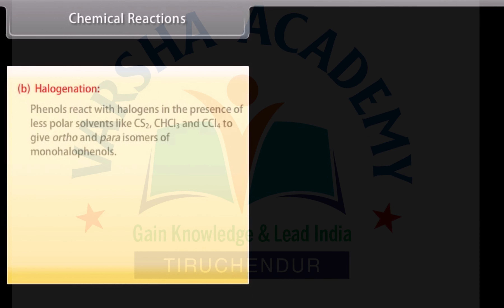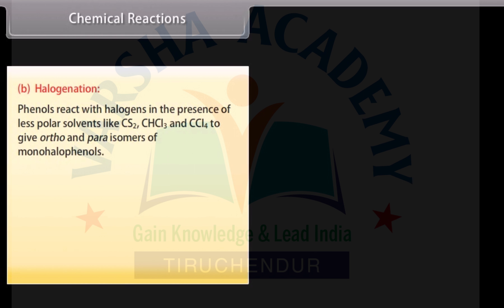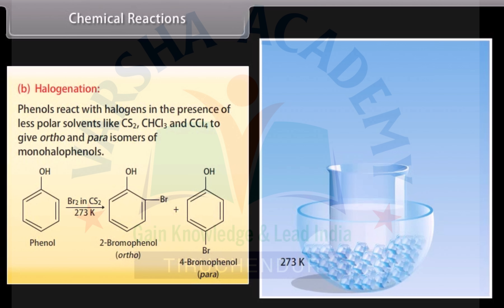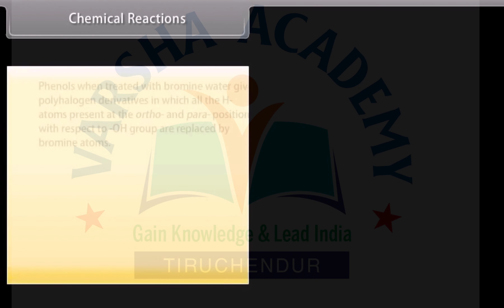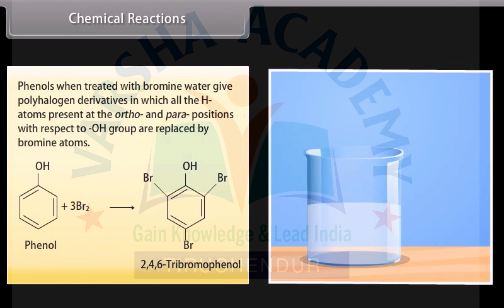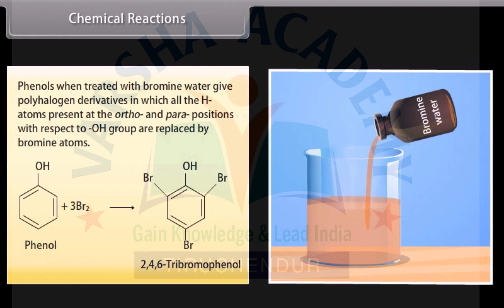Halogenation: phenols react with halogens in the presence of less polar solvents like carbon disulfide, chloroform, and carbon tetrachloride to give ortho- and para-isomers of monohalophenols. Bromine in carbon disulfide reacts with phenol and forms 2-bromophenol and 4-bromophenol. Phenols when treated with bromine water give polyhalogen derivatives in which all the hydrogen atoms at the ortho- and para-positions with respect to the hydroxyl group are replaced by bromine atoms, forming 2,4,6-tribromophenol.